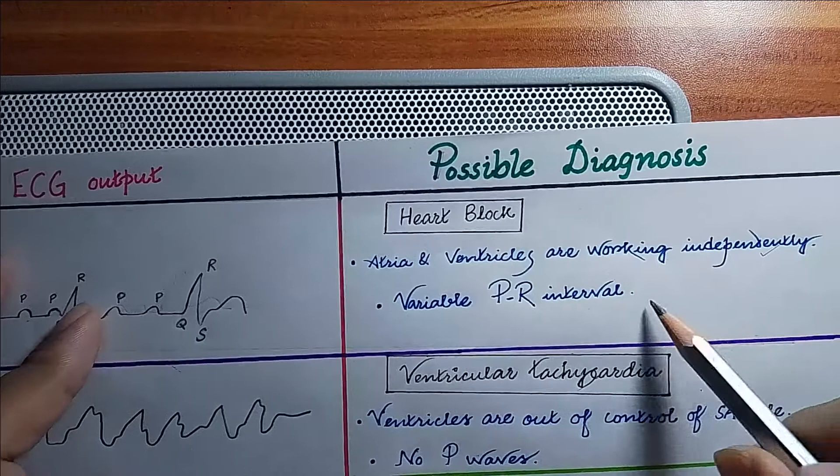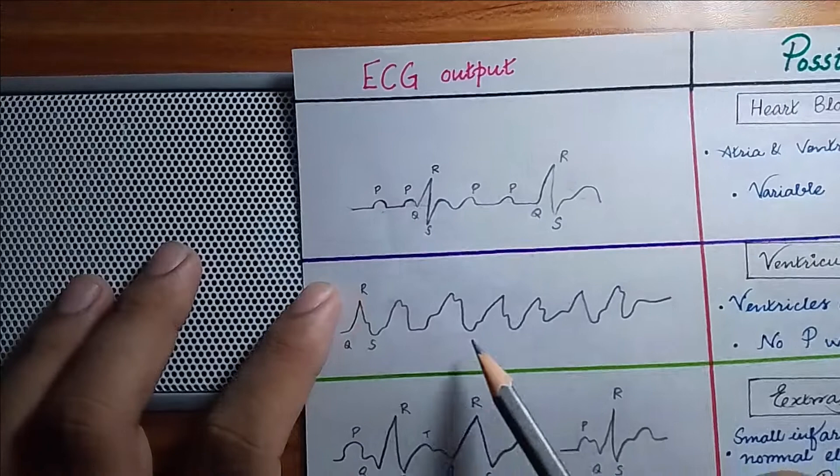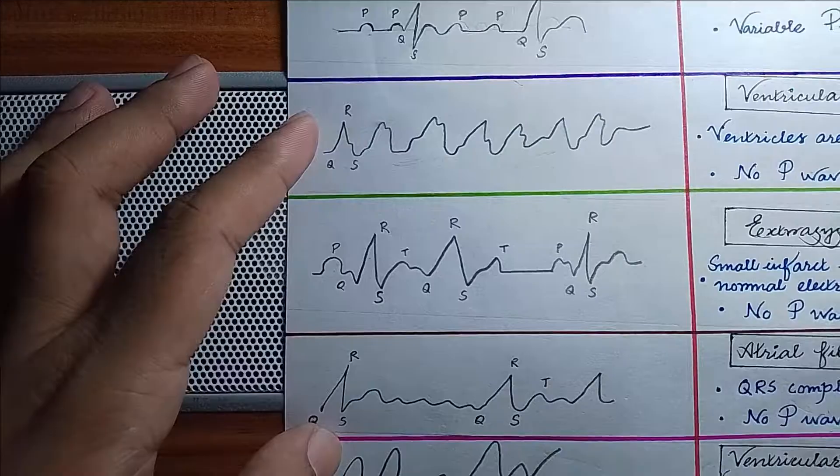In the second ECG you can see there is no P wave, so ventricles are basically out of control from the SA node. So this condition, the possible diagnosis is ventricular tachycardia. In the next ECG pattern...